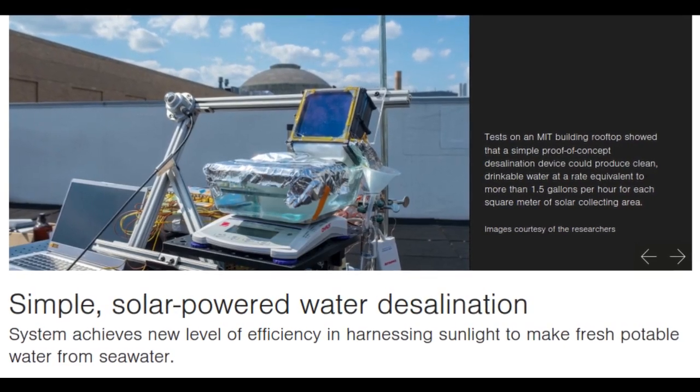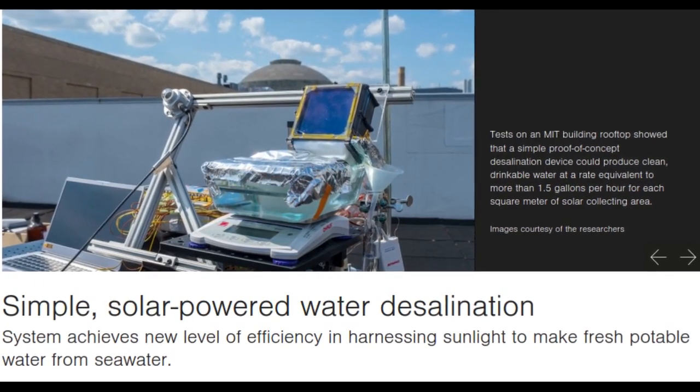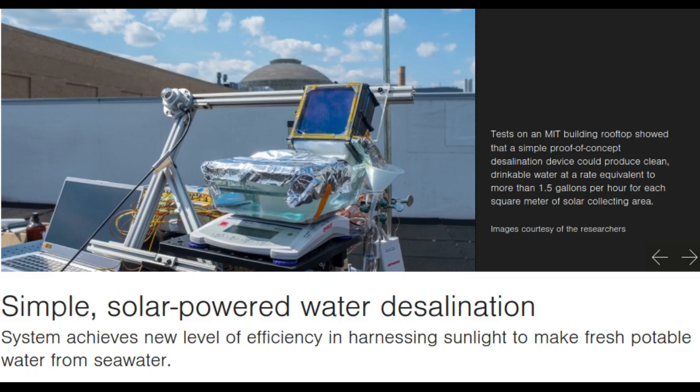A completely passive solar-powered desalination system developed by researchers at MIT and in China could provide more than 1.5 gallons of fresh drinking water per hour for every square meter of solar collecting area. Such systems could potentially serve off-grid arid coastal areas to provide an efficient, low-cost water source.